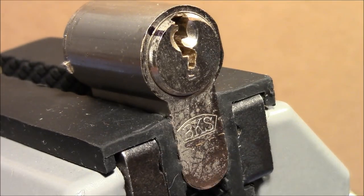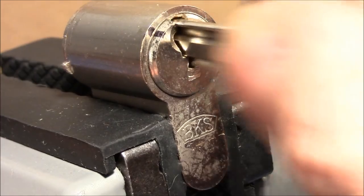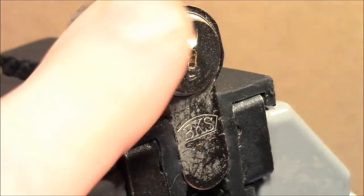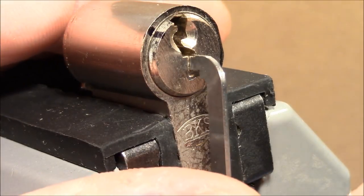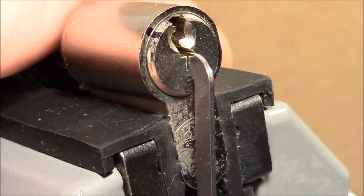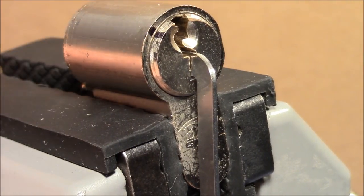Alright, the lock is put back together. Works and is locked up. Now I've marked the neutral position when turning it counterclockwise. That's the direction I want to pick it.